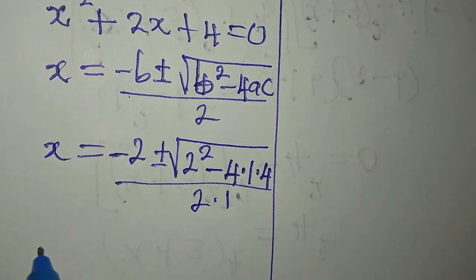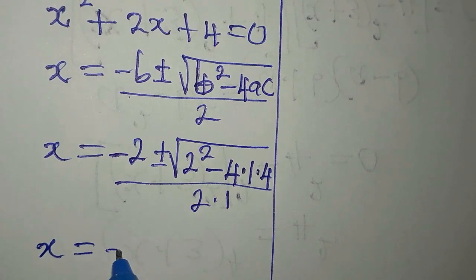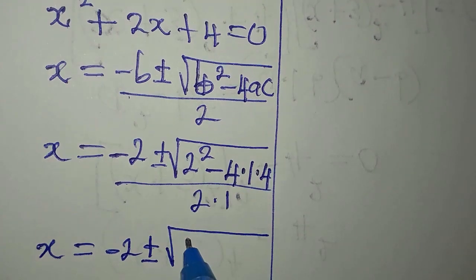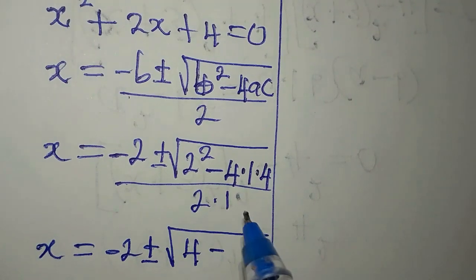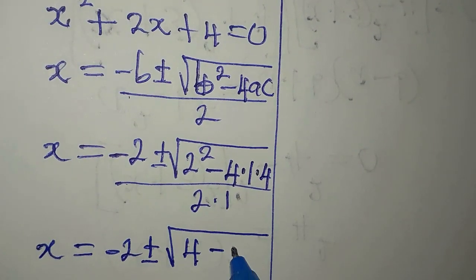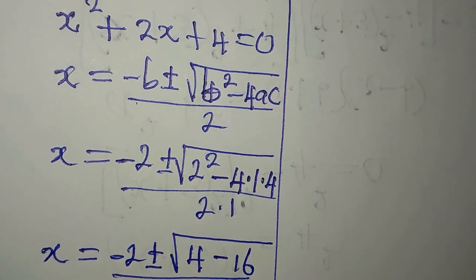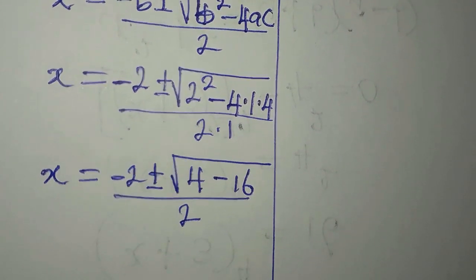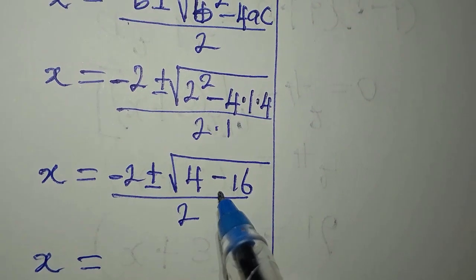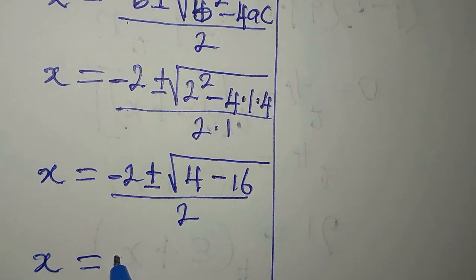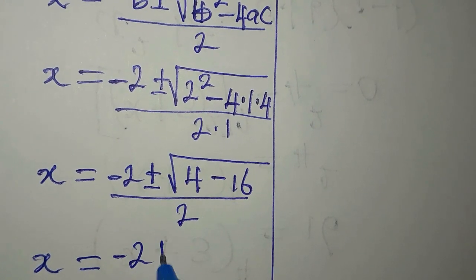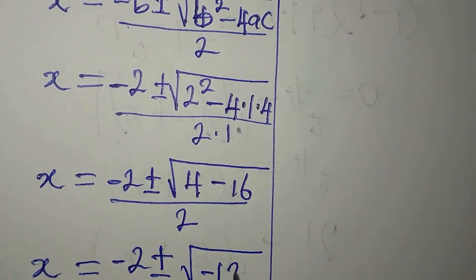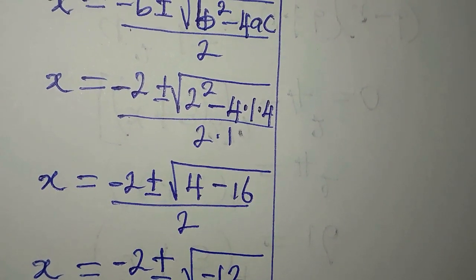x from here equals minus 2 plus or minus, 2 squared is 4, minus 4 times 1 times 4 is 16, divided by 2. Now subtract what we have under the root. We have minus 2 plus or minus, if I subtract I have minus 12, then divide by 2.